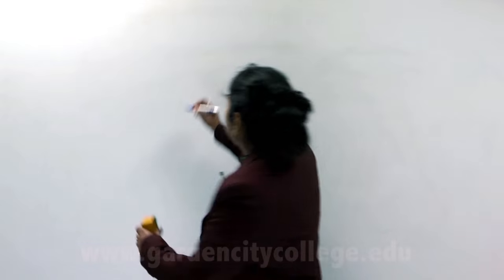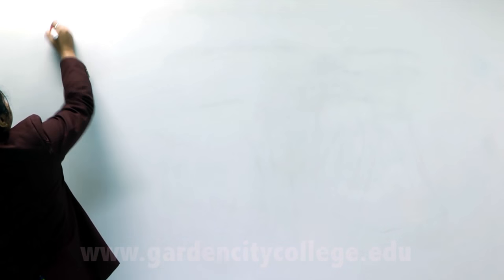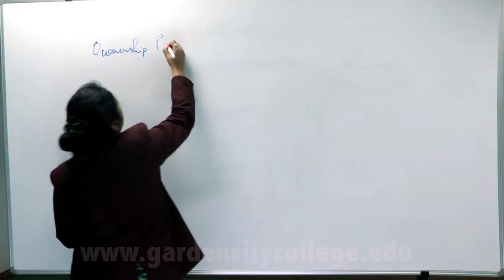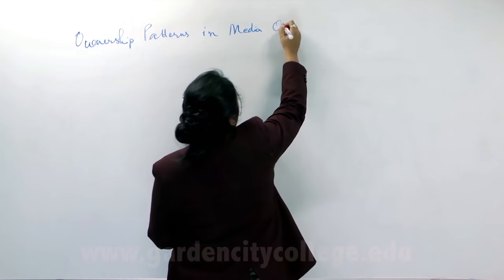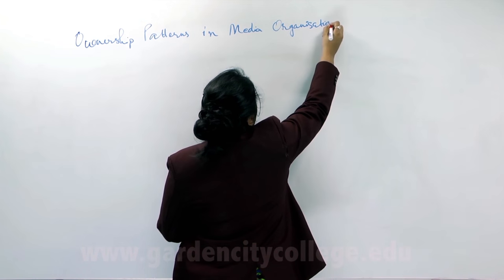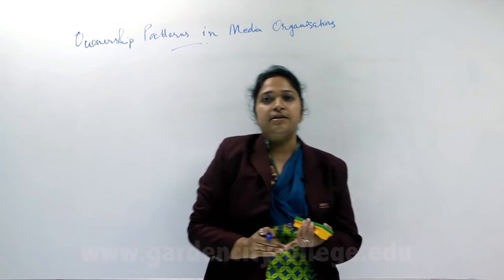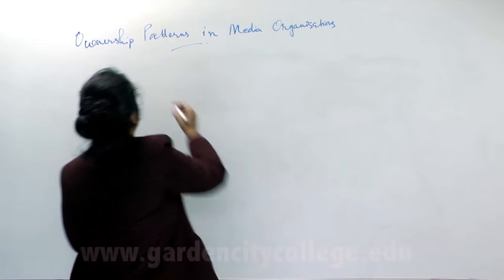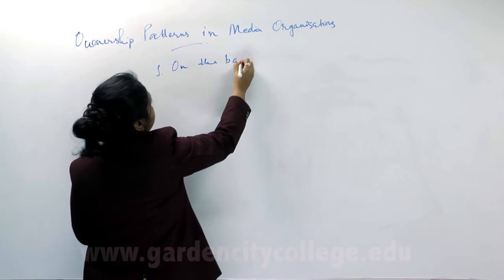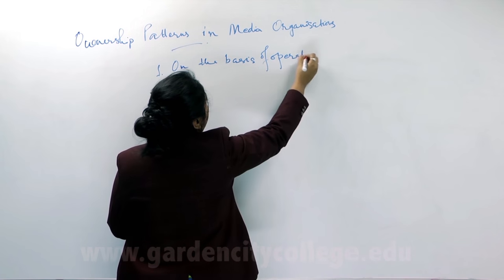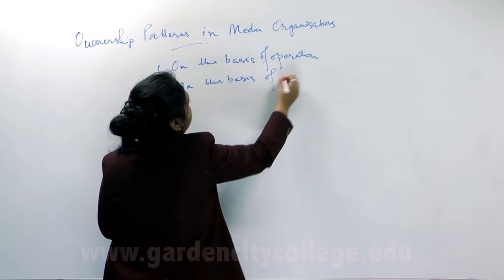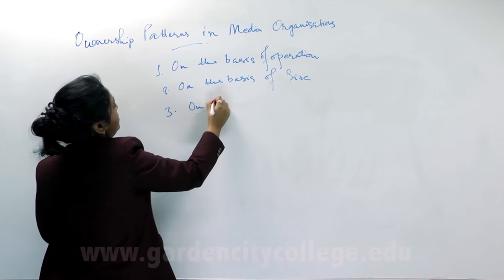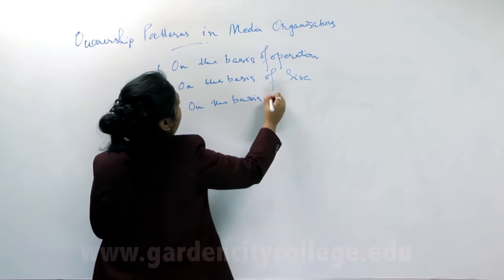The ownership patterns in media organization have been categorized under various categories. The categorization is done in three types: first, on the basis of operation; secondly, on the basis of size; and third, on the basis of funding.